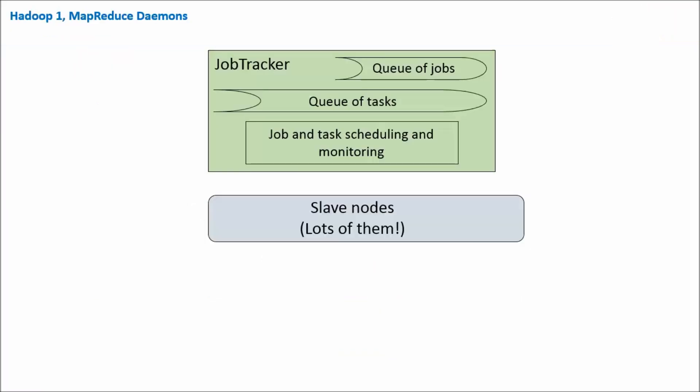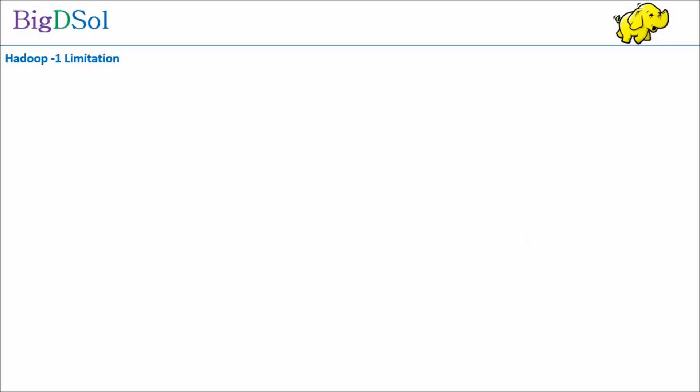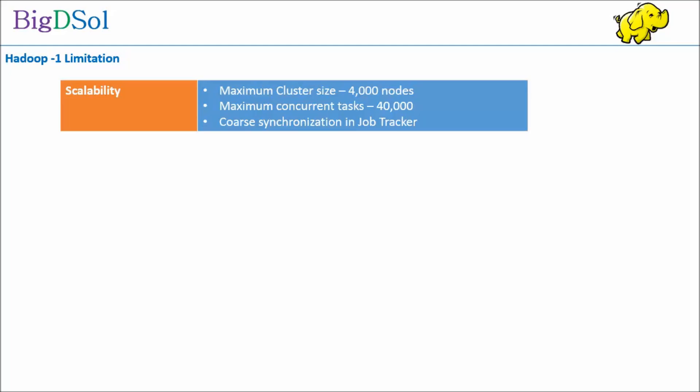This is another view of MapReduce daemons — JobTracker has a queue of jobs and a queue of tasks, and we have slave nodes. Looking at Hadoop 1 limitations so we can appreciate the needs for Hadoop 2 and YARN architecture: the first limitation is scalability — it can support a maximum of 4,000 nodes and 40,000 concurrent tasks, with core synchronization issues in TaskTracker.